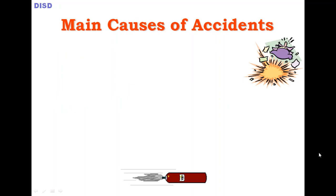When it comes to cylinder safety, the key topics are: first, how to handle or use the gas cylinder; second, how to store the gas cylinder; and third, how to transport the cylinder. This whole safety topic covers these three areas. Now we need to know the reasons or causes of accidents.